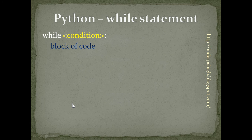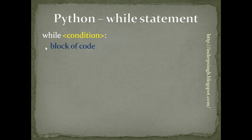The while statement has two formats. In the first format, we have 'while' followed by a condition, followed by a colon and a block of code. First, Python checks the condition. If the condition is true, it runs the block of code. Then it rechecks the condition. If the condition is still true, it reruns the block of code. If the condition becomes false, it ends the while statement.